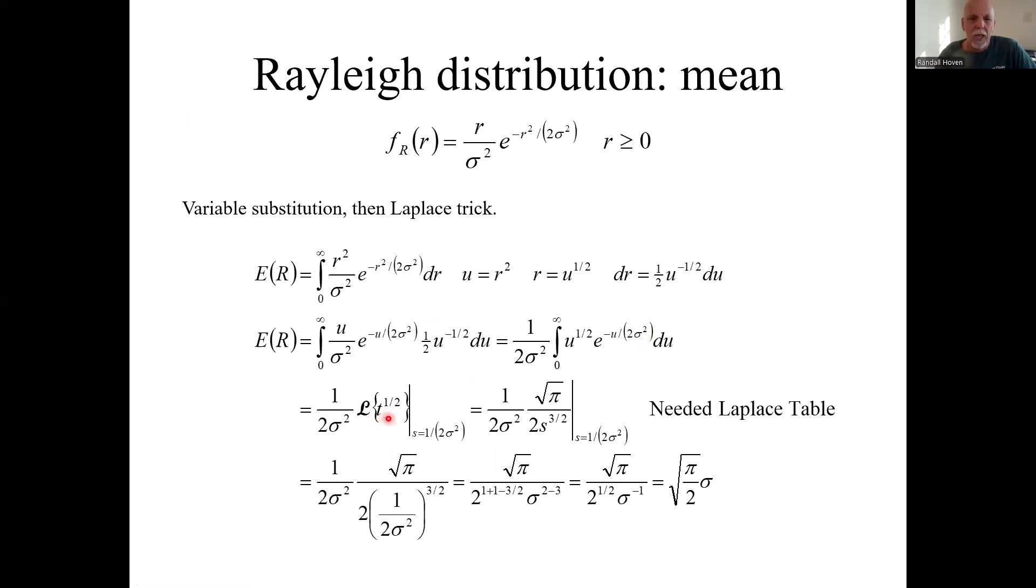So t to the one half, that's a little tricky. You would need the Laplace table. So you could argue we didn't save that much work here. Here's the Laplace transform of t to the one half. And we need to plug in s equals one over two sigma squared. The simplification is a little algebraically tedious.